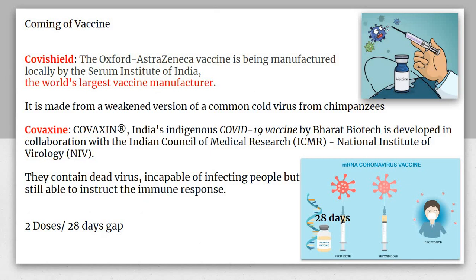Regarding vaccines, two vaccines received approval in India. The first is Covishield and the second is Covaxin. Covishield is the Oxford-AstraZeneca vaccine, being manufactured locally by the Serum Institute of India. It was developed in Oxford and AstraZeneca's labs in the UK.